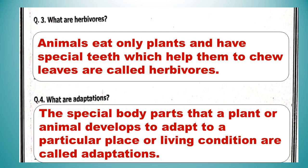Question number three: What are herbivores? Animals that eat only plants and have special teeth which help them to chew leaves are called herbivores. Question number four: What are adaptations? The special body parts that a plant or animal develops to adapt to a particular place or living condition are called adaptations. After completion of this worksheet, paste it on your science notebook.